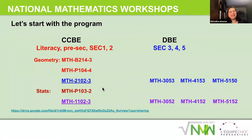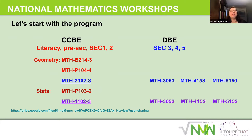Let's take a look at the overview of the program. When we look at the program, it has the CCB and the DBE, which is cycle one and cycle two. In the CCB, you have literacy, pre-sec, sec one and two. And the DBE has sec three, four and five.